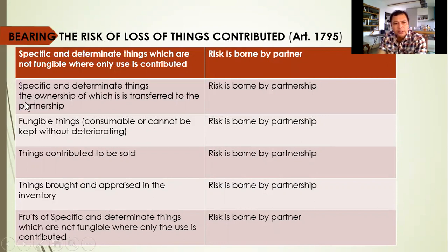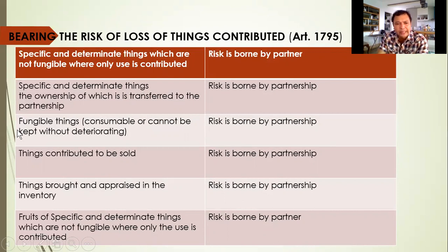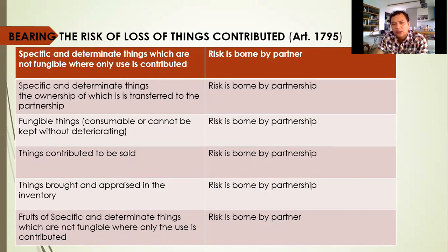Number two: when it involves specific undetermined things, the ownership of which is transferred to the partnership. Since ownership is transferred, if the thing is lost then it is the partnership who bears the loss. Number three: when it involves fungible things — these are consumable things or things which cannot be kept without deteriorating, meaning their value is diminished. So the risk is borne by the partnership.